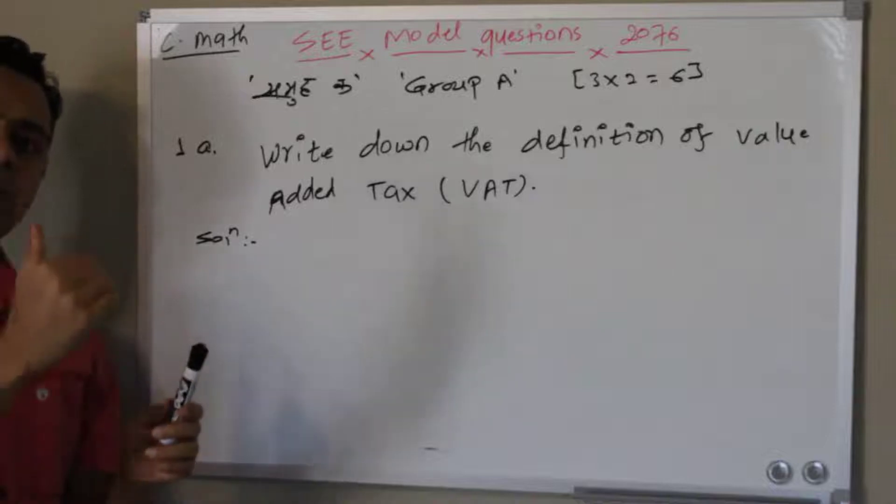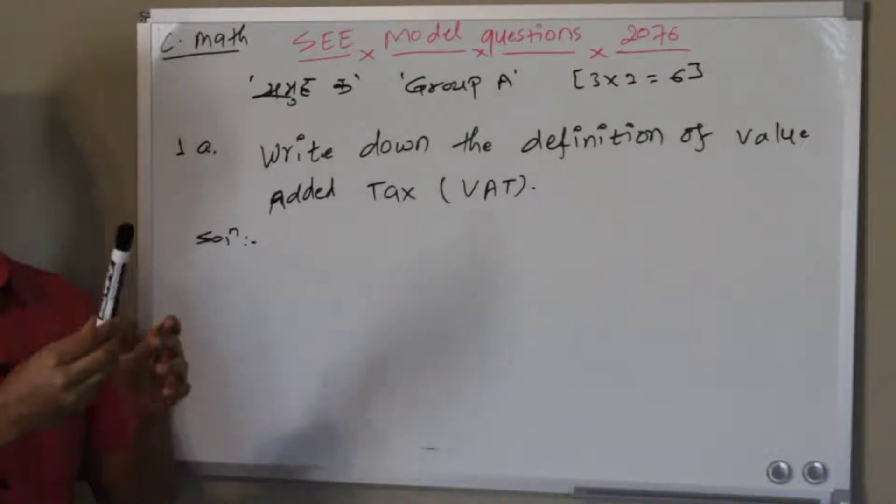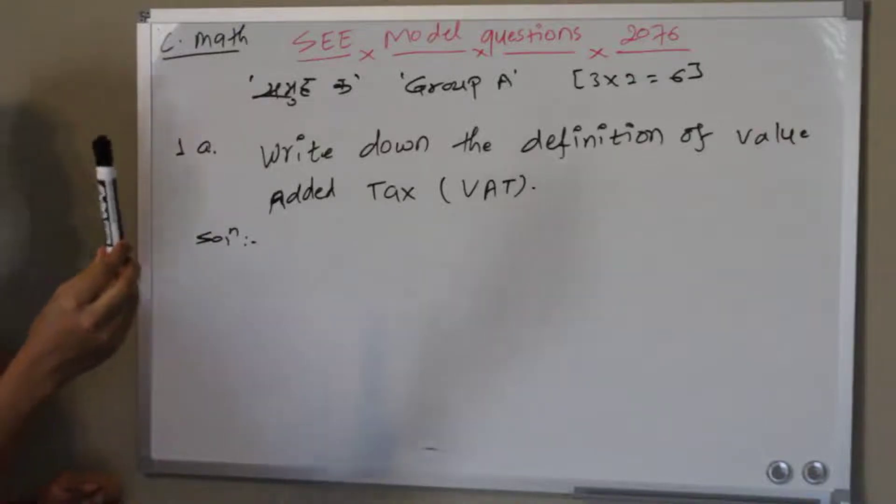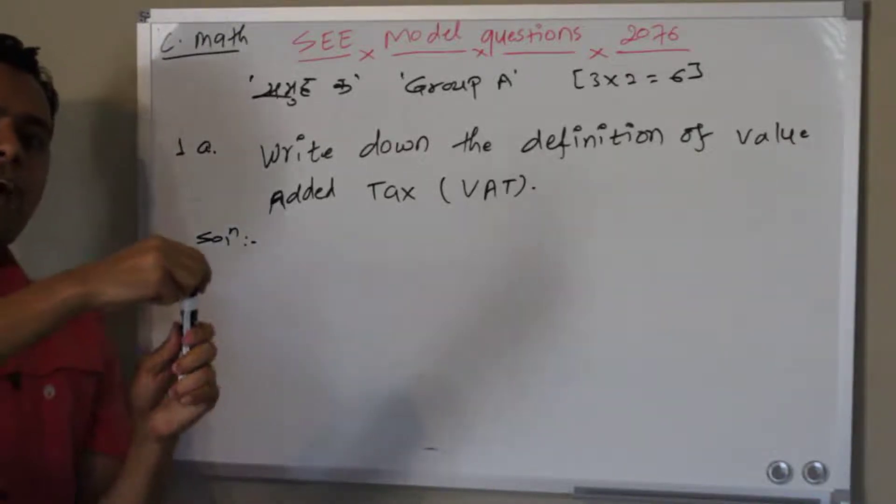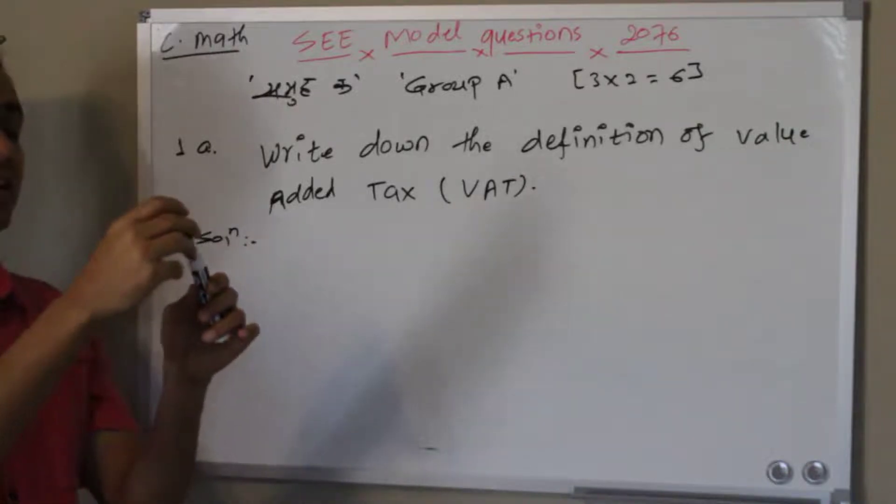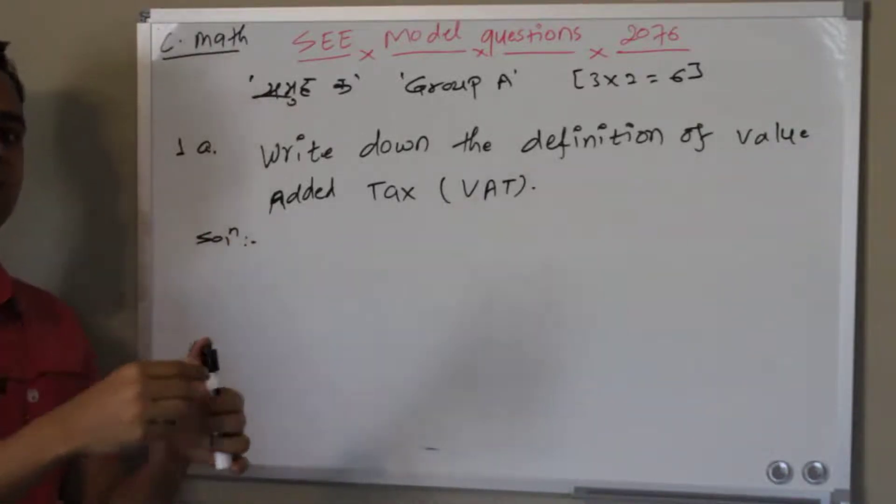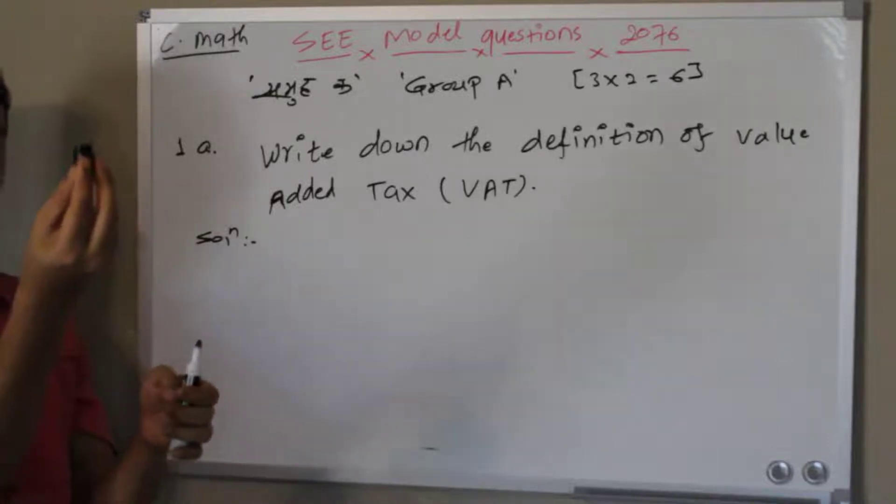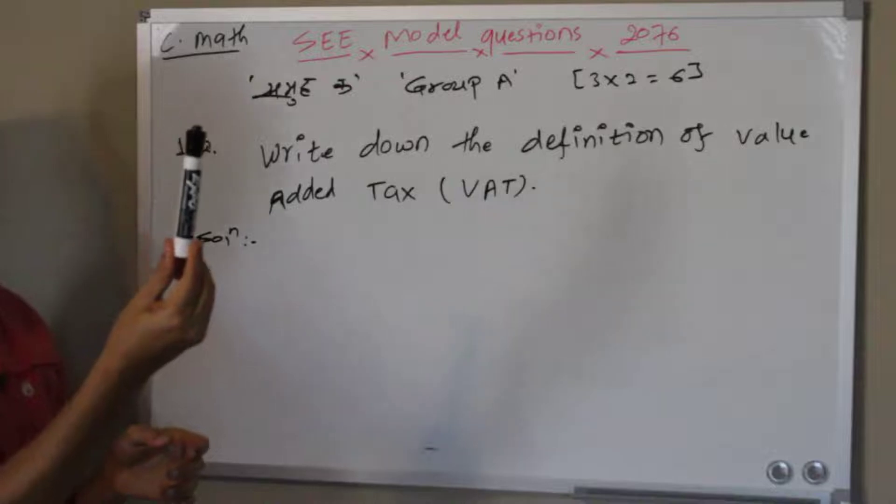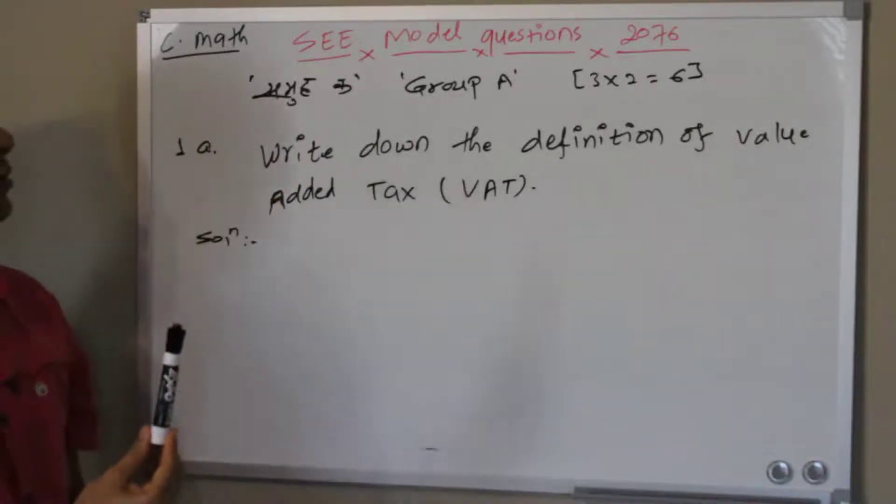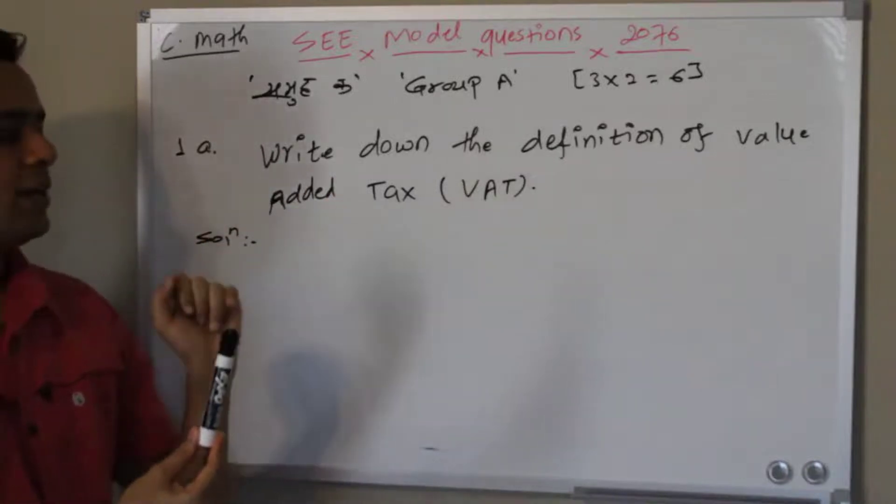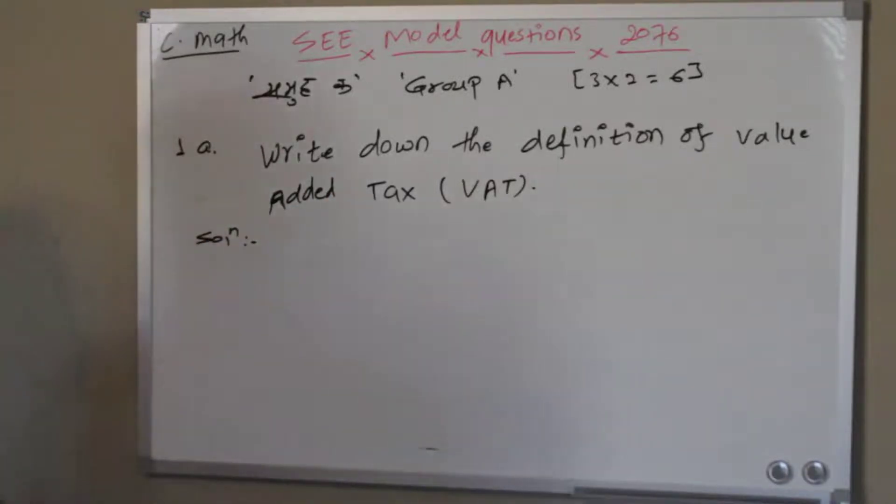These taxes are called value-added tax because whenever you add one value, another value, another value, another value, that's why it's called value-added tax - tax on each value. And then I have to add those values to produce this marker. So there are taxes on each value, that's why it's called value-added tax. Let me write down the short definition.